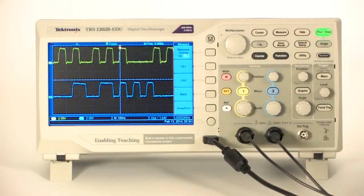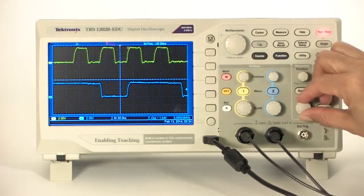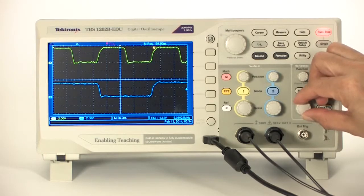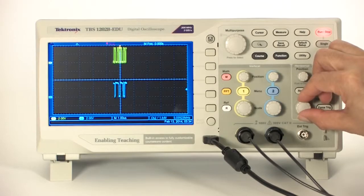An easy way to get a look at any signal is to stop the acquisition. Once you stop the acquisition, you can use the horizontal controls to look at signal details. This is easy to do, but you only get to see a handful of transitions.